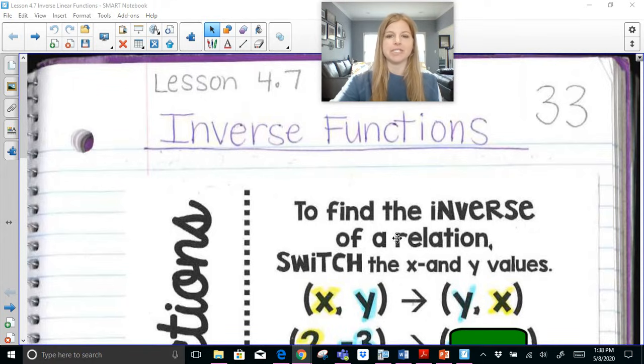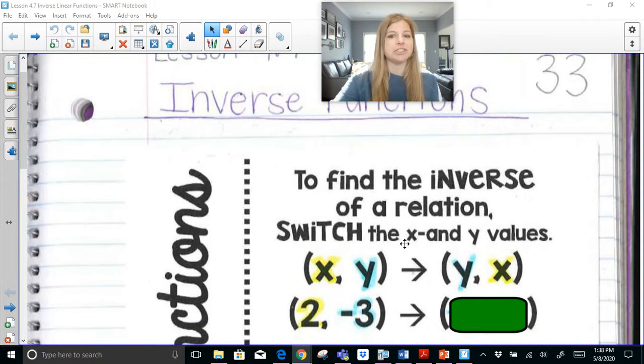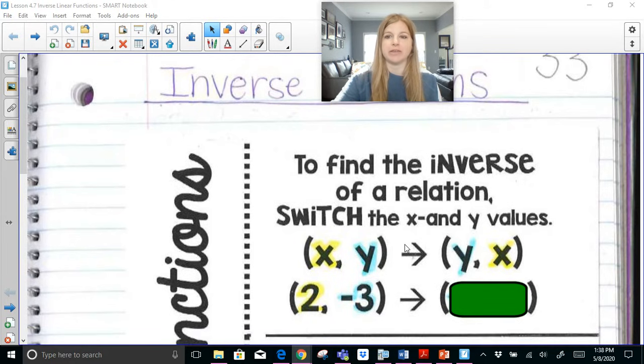First of all, to find the inverse of a relation simply means to just switch the x and y values. We don't change any signs, we don't do anything else but just switch the order.